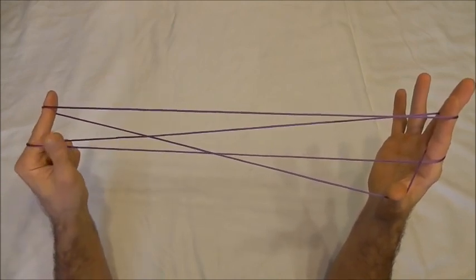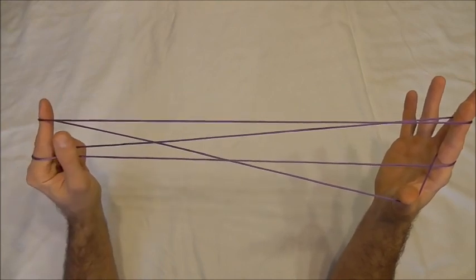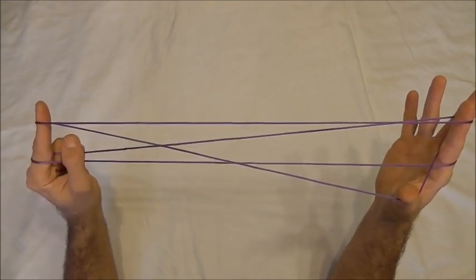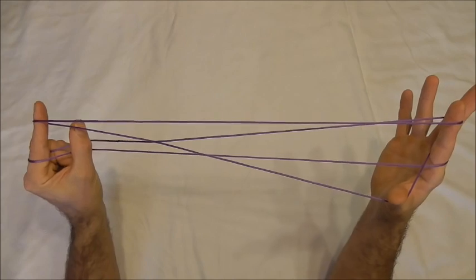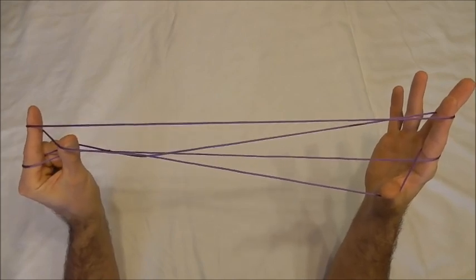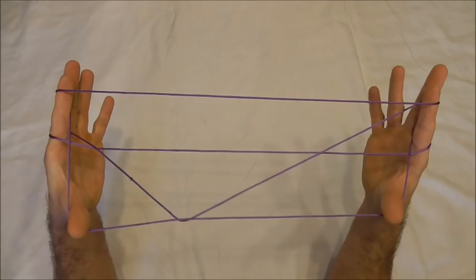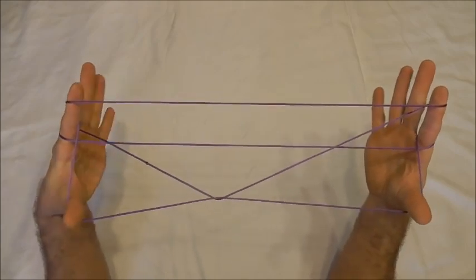And with my left hand I want to go over both of those lower pointer finger strings and collect on the back of my thumb the upper far pointer finger string. So it should look like this.